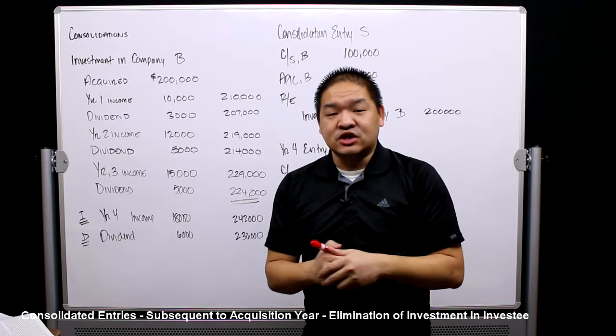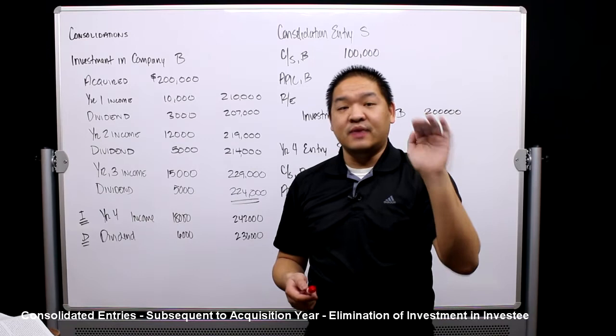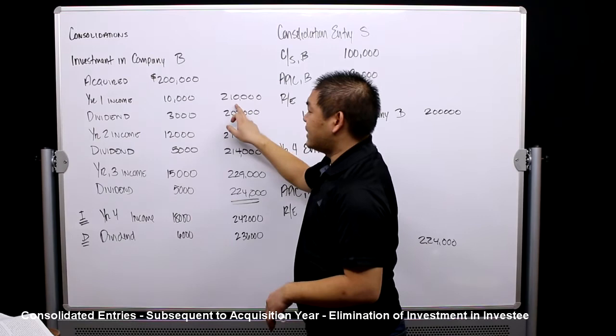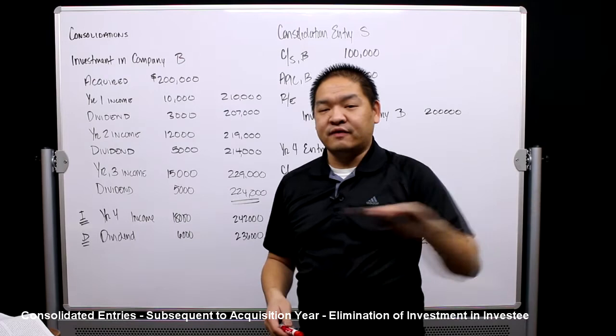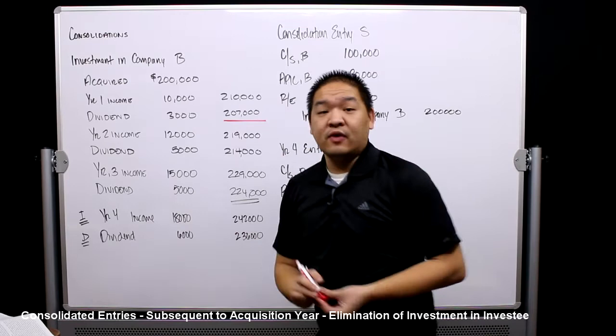We decrease the investment account when we receive dividends. If Company B has income of $10,000, we debit investment in Company B for $10,000 and credit equity in Company B for $10,000. We decrease by dividends — debit dividends receivable $3,000, credit investment in Company B $3,000. So the ending balance in investment in Company B at the end of year one is $207,000.